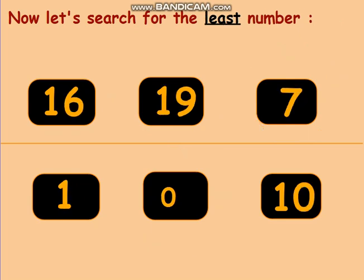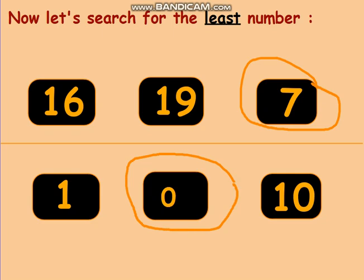Now what about finding the least number? The least number is the total opposite of the greatest — it means we search for the smallest number. For 16, 19, and 7, of course number 7 is the least. For 1, 0, and 10, the least one is zero. Thanks guys for watching this video, goodbye!